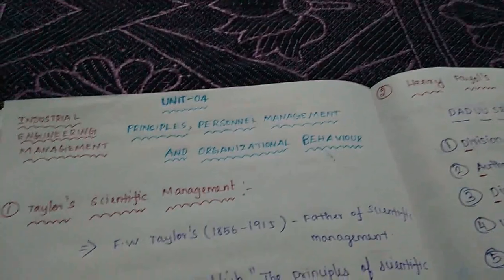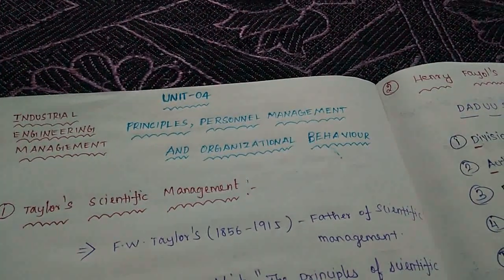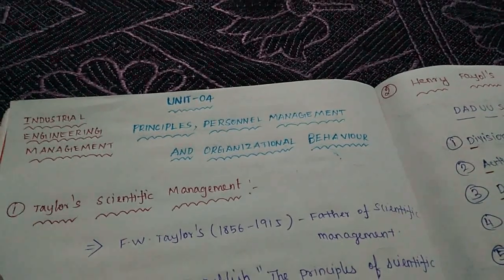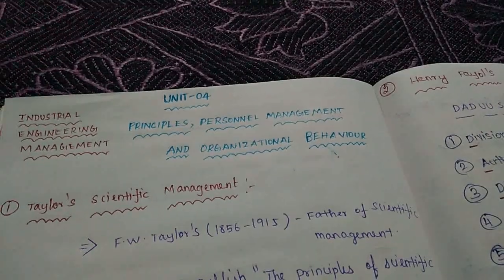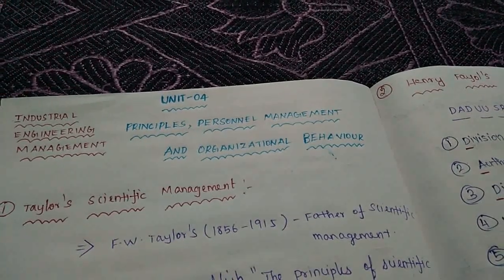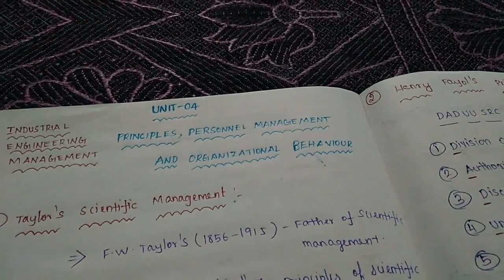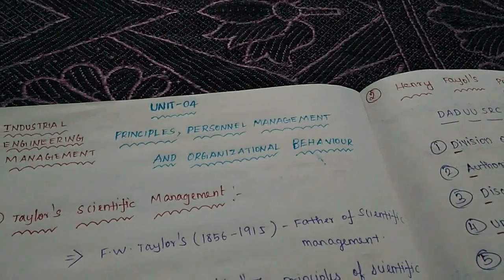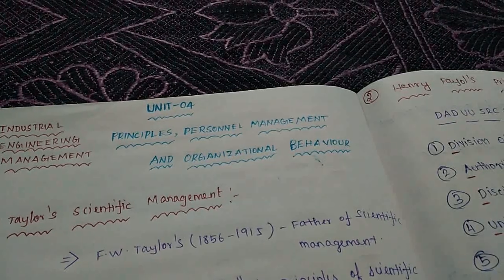Hi friends, here we are going to talk about a video about Diploma Polytechnic final year, IEM subject — Industrial Engineering Management Lab. Unit 4, Unit 1, Unit 2, Unit 3, plus 5 units are important questions. Unit 4 is about Industrial Engineering and Industrial Safety.